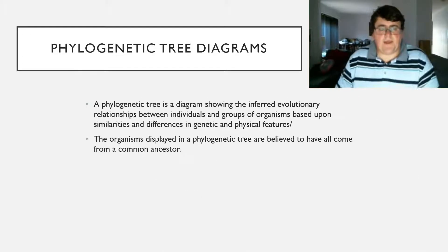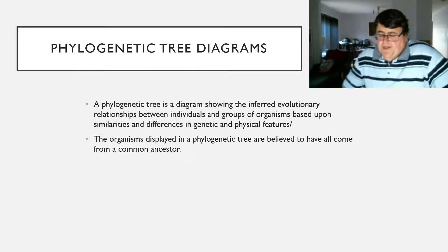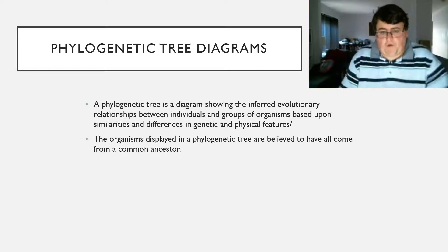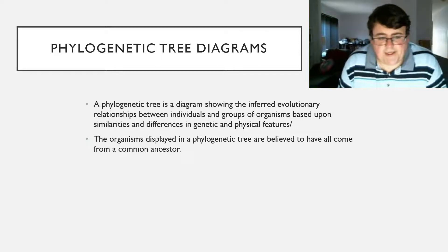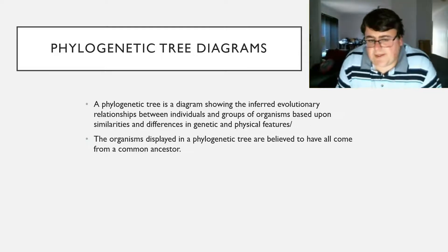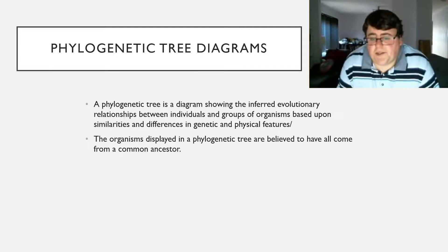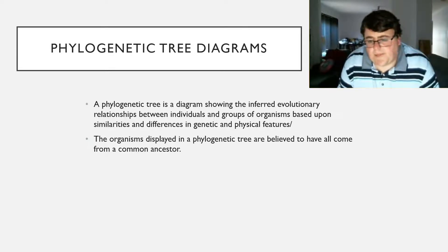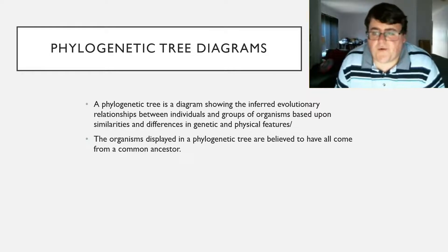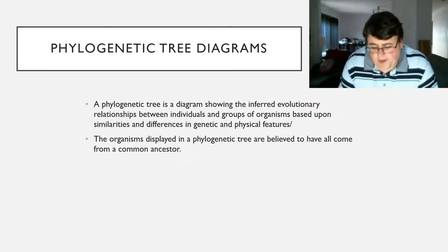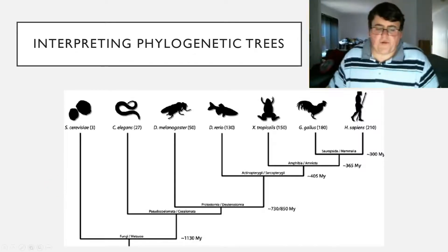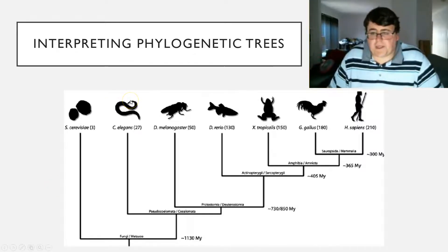Moving on to phylogenetic tree diagrams. These are the type of diagrams you're going to have to draw and analyse in both the test and the exam. A phylogenetic tree is a tree diagram that infers evolutionary relationships between individuals and groups of organisms based upon similarities and differences in both genetic features and physical features. If you've got an organism on a phylogenetic tree, it's believed to have a common ancestor with every other organism on that tree. Let's look at an example and talk about a few key points.